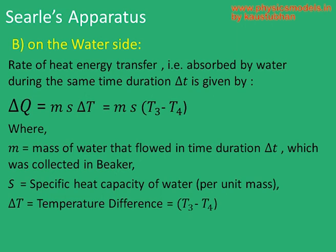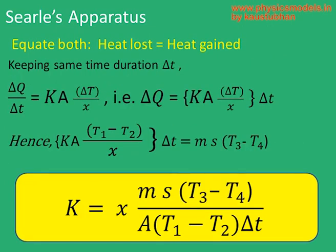The next step is to equate the heat given by steam to the material with the heat energy absorbed by the water from the material. In order to equate the heat lost with the heat gained, both sides of the equation must be delta Q's. But on the steam side we had delta Q by delta time, so that delta time in the denominator has to be moved across to the other side. Once we do that, the heat lost by steam equals delta Q, and the heat gained by water on the right-hand side also equals delta Q. Then we are able to equate them and solve for K as shown.